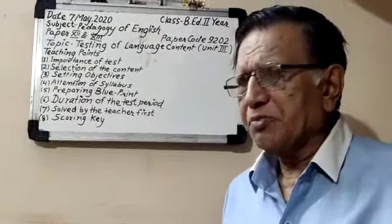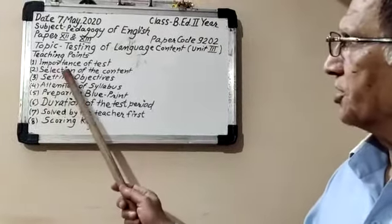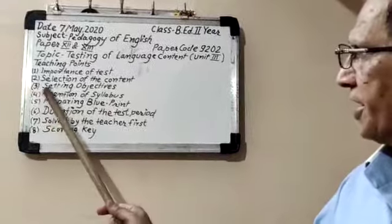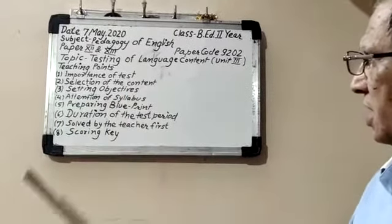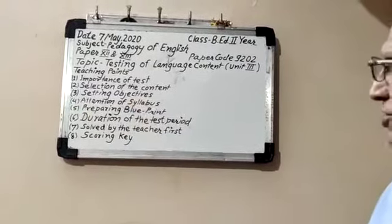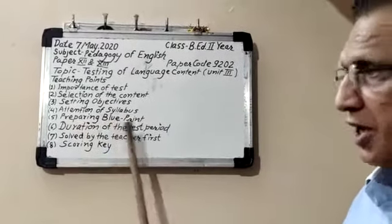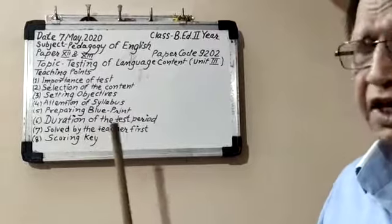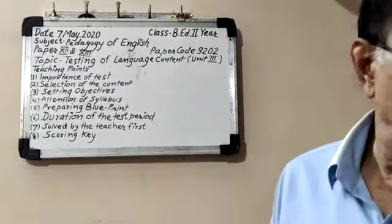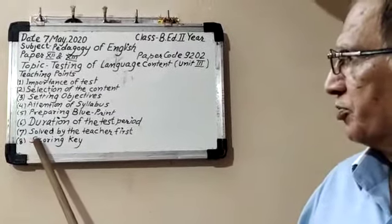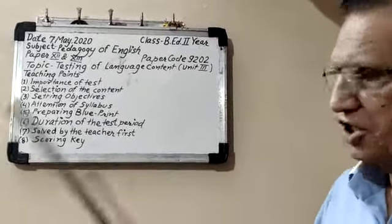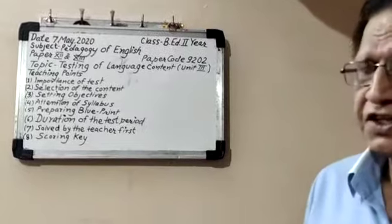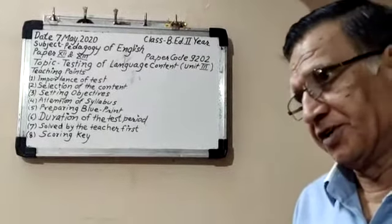The teaching points are: importance of test, selection of the content, setting objectives, attention of syllabus, preparing blueprint, duration of the test period, solved by the teacher first, and preparing the scoring key. Under these 8 points, we shall study how language content are to be tested by the teacher.